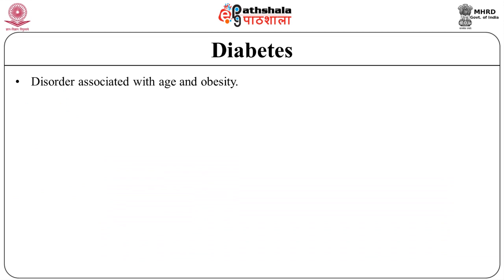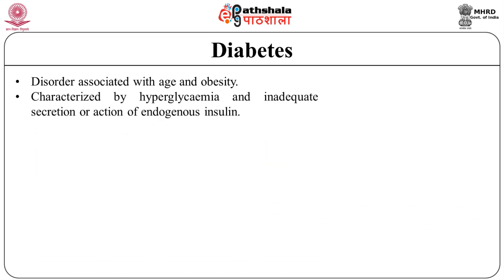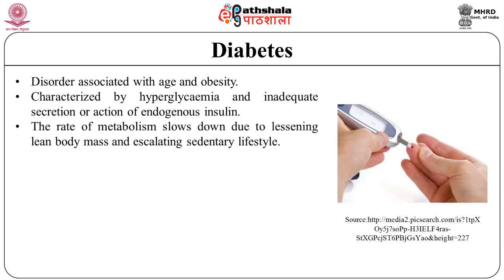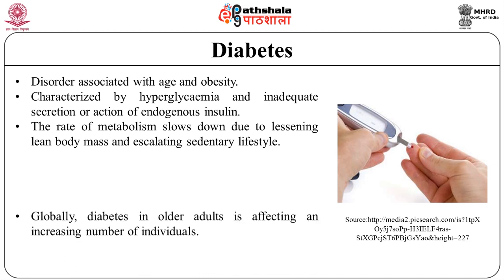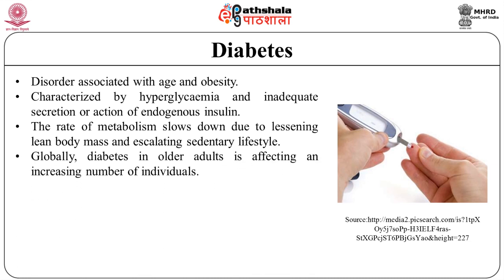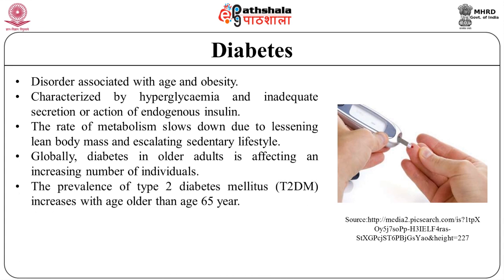Type 2 diabetes is a metabolic disorder associated with age and obesity, characterized by hyperglycemia and inadequate secretion or action of endogenous insulin. Among elderly, the prevalence of diabetes increases as the rate of metabolism slows down due to lessening lean body mass and escalating sedentary lifestyle. Globally, diabetes in older adults is affecting an increasing number of individuals. The prevalence of type 2 diabetes mellitus increases with age and reaches 25% in those older than age 65 years.